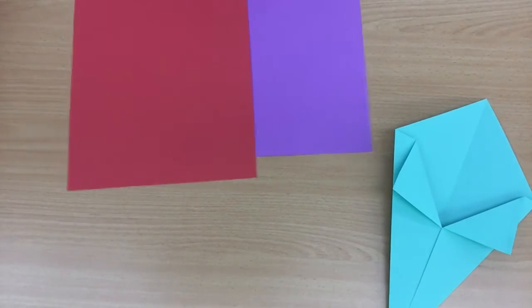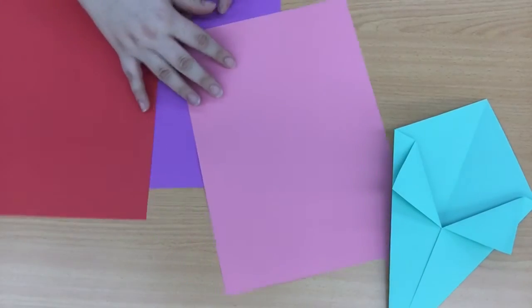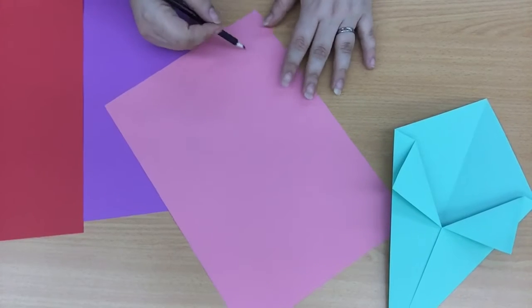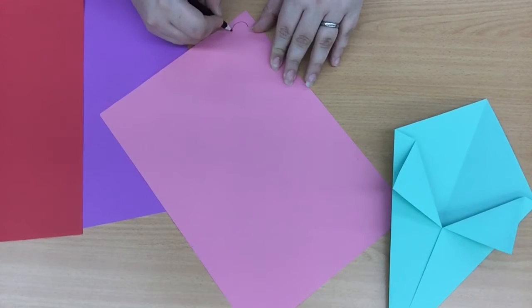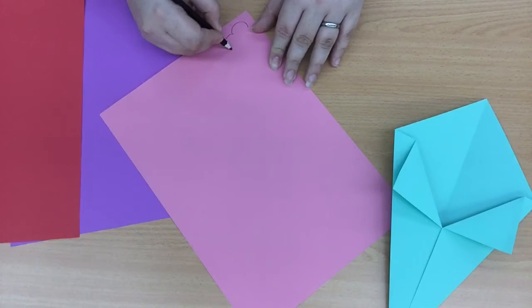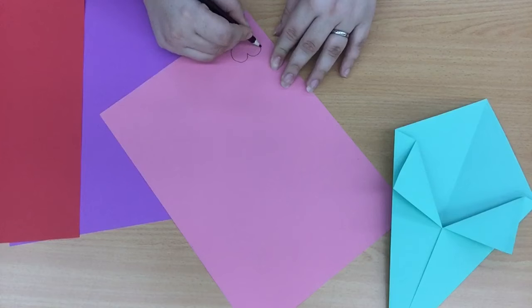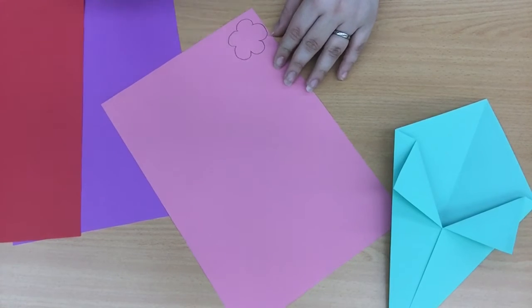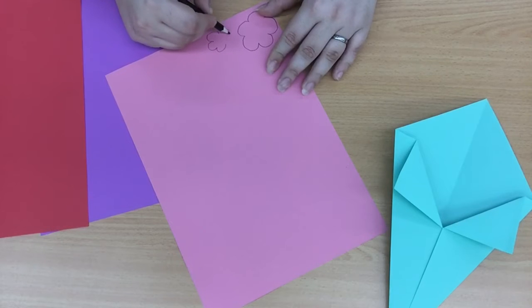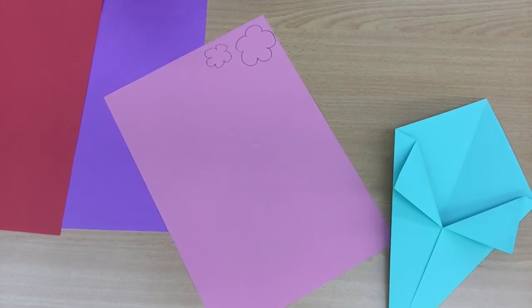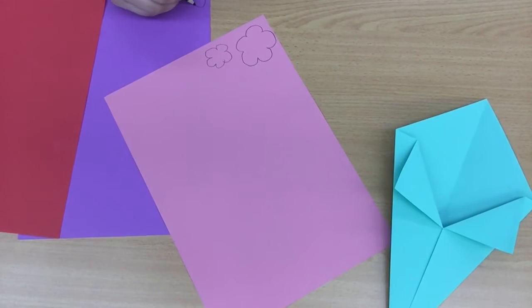Take assorted colored paper and your pencil and we're going to start by drawing some flower shapes. Remember this is your bouquet so make your flowers as unique as you are. Any shape you like. I'm doing one big one and one small one in each color but this is completely up to you.